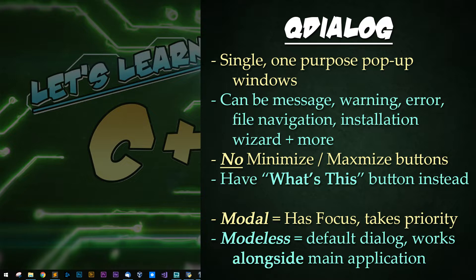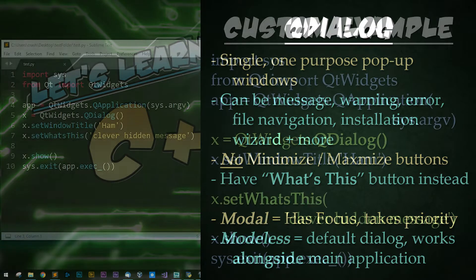QDialogues are simple, one-purpose pop-up windows. Dialogues can be a message, error warning, file navigation, an installation wizard, or any number of other things. Dialogues do not have minimize or maximize buttons, but instead have a 'What's This' button in place of them. A modal dialog blocks other windows within the application until the current dialog is completed or canceled. A modeless dialog works alongside the main application and is the default kind of dialog.